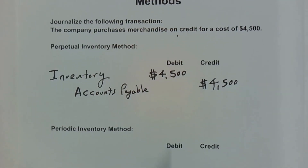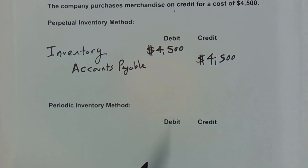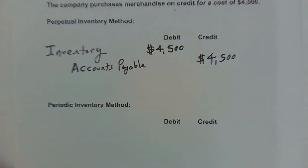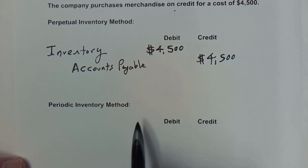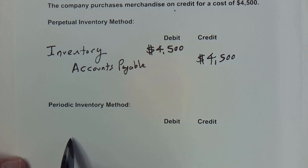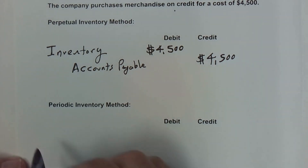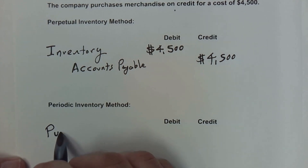Now let's look at the periodic inventory method. In that method, companies do not place the items directly into inventory for accounting purposes, but a periodic inventory is taken. You can then calculate the cost of goods sold based upon the beginning inventory, add in the purchases, and then subtract out the ending inventory to get cost of goods sold. In this case, we're purchasing the same $4,500 worth of merchandise on credit, but because it's the periodic system, we do not put it directly into inventory for accounting purposes. Of course, the actual physical items are inventory, but for accounting we're going to put it into purchases.